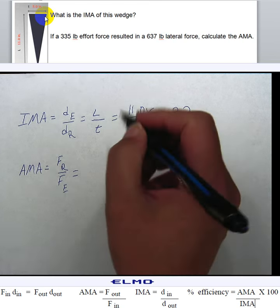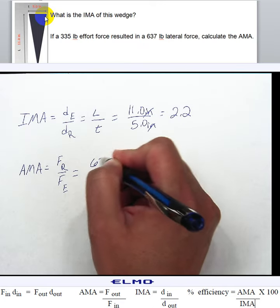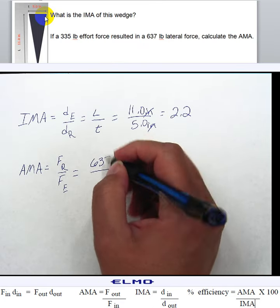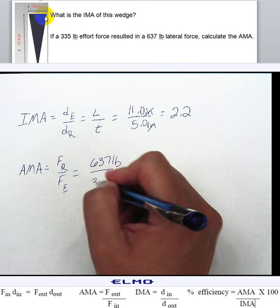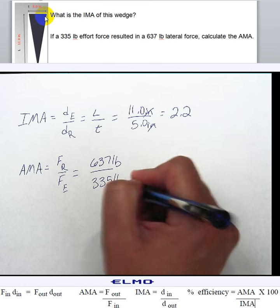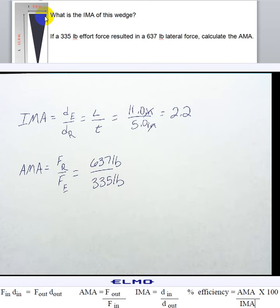So, force of our resistance is 637 pounds. And force of our effort is 335 pounds. As it says, 335 pounds of effort force. So, that would be effort. And then for lateral force, it's talking about the distance here.